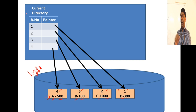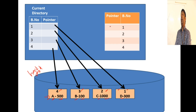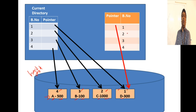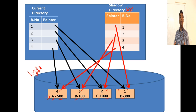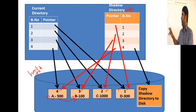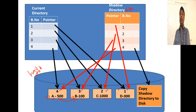Before starting any transaction in shadow paging, you create a copy of the directory on main memory with the block numbers and pointers to all blocks. This copy is called the shadow directory or shadow copy. An important step is that you must move the shadow copy to your hard disk to make it persistent - since we are dealing with recovery, we write the shadow directory also to disk.